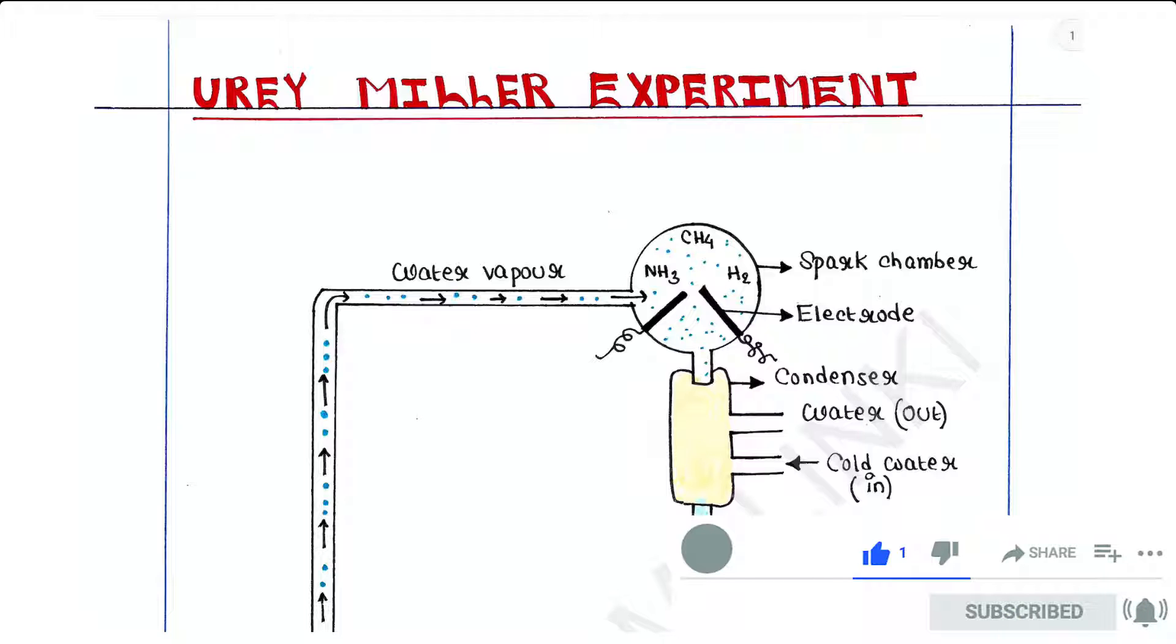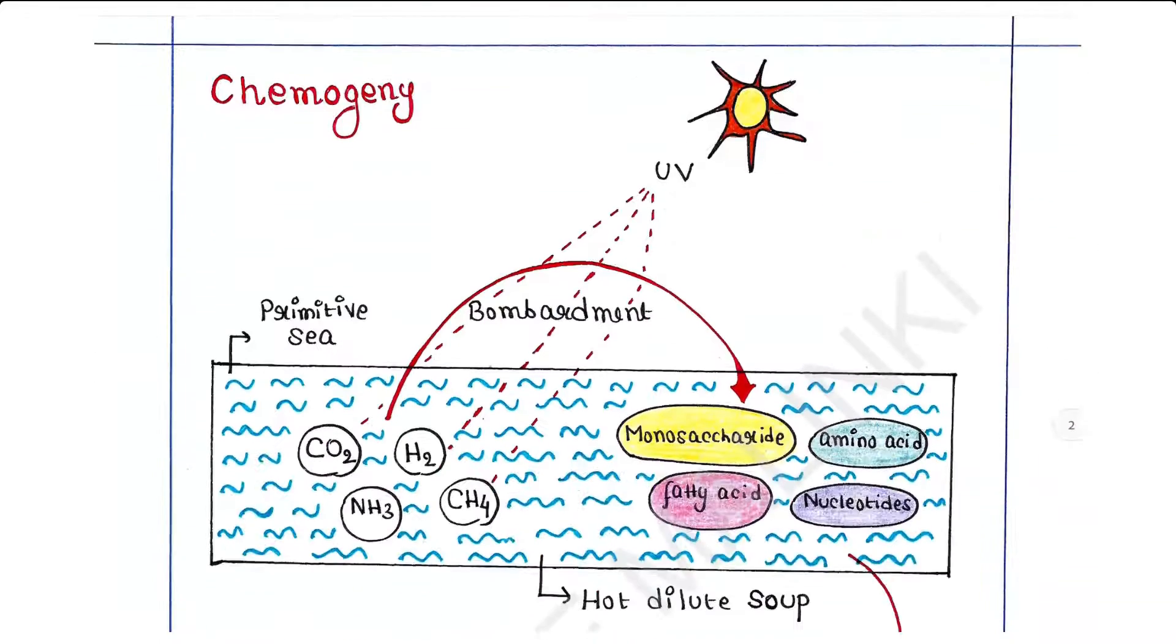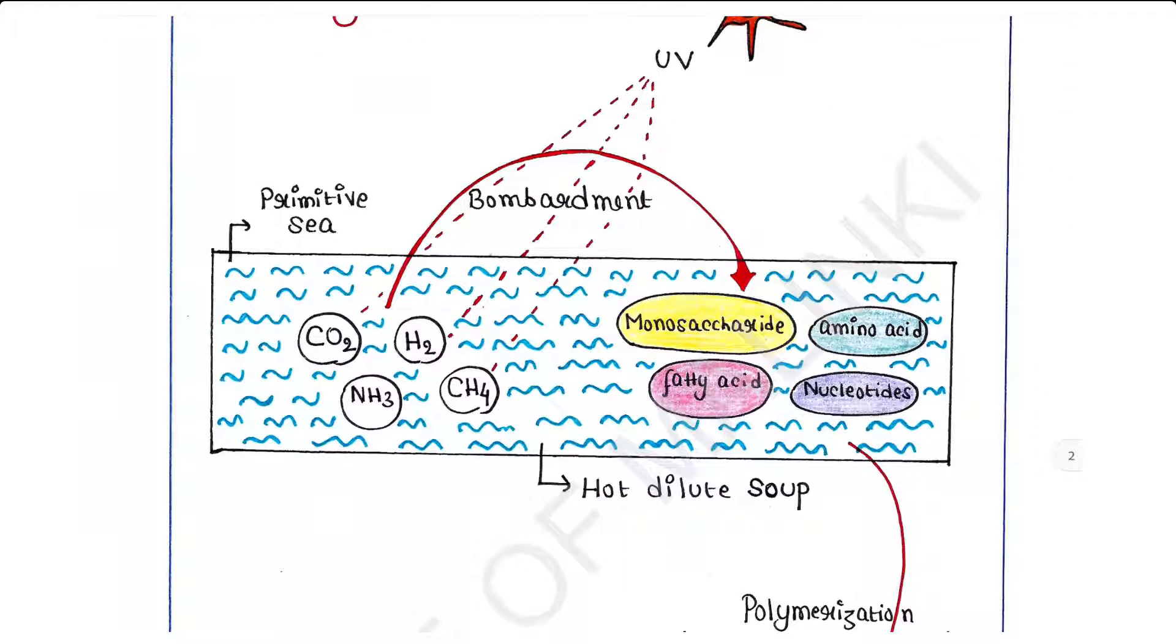In the last lecture, we have seen that Haldane and Oparin have given the most acceptable theory regarding origin of life. According to that theory, we have seen simple organic molecules like amino acids, nucleotides, monosaccharides, fatty acids, etc.